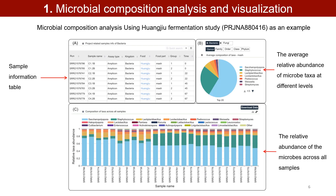Microbial composition analysis and visualization: (a) a sample information table showing curated sample metadata using a Huangjiu fermentation study (PRJNA880416) as an example. (b) A pie chart depicting the average relative abundance of microbial taxa at the genus level. (c) A stacked bar plot showing the relative abundance of the microbes across all samples of the same project.